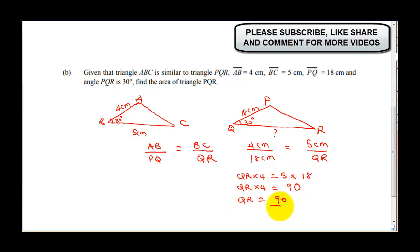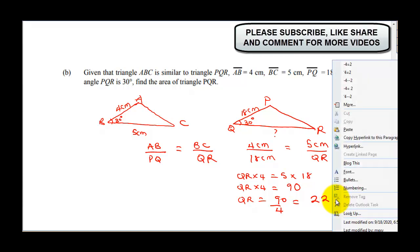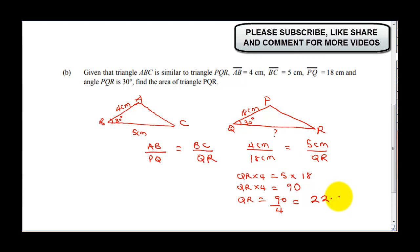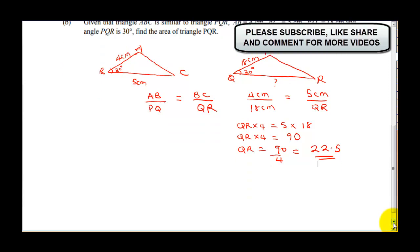So QR equals 90 divided by 4. Doing the long division: 4 into 9 gives 2 remainder 1, bringing down gives 10, 4 into 10 gives 2 remainder 2, then 4 into 20 gives 5. So QR equals 22.5.